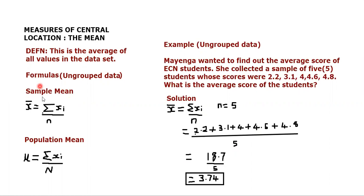Below are the formulas for the mean for ungrouped data. You must be very careful - there is a formula for grouped data and a formula for ungrouped data. The sample mean, X bar, is equal to the summation of Xi over n.